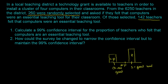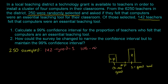We're taking a sample of those 250 teachers, and we got that 142 felt that the computers were an essential teaching tool. So in our survey, we had 250 sampled and got 142 who said that it is good — we'll call that a 1. So we got 142 ones. And the remaining 108 said that it's not good, so 108 zeros. 108 plus 142 is 250.